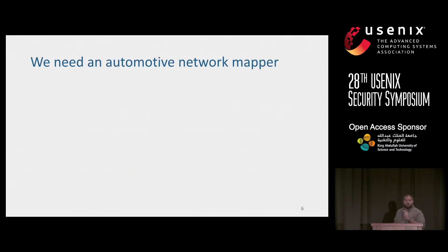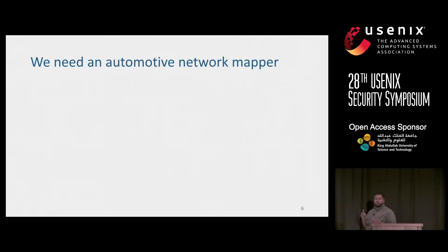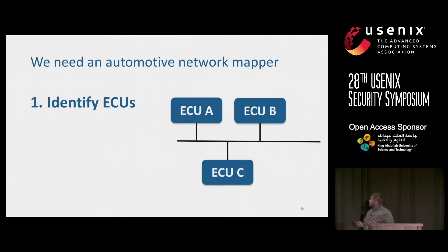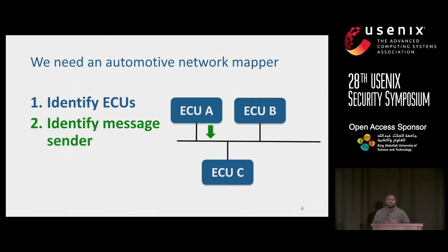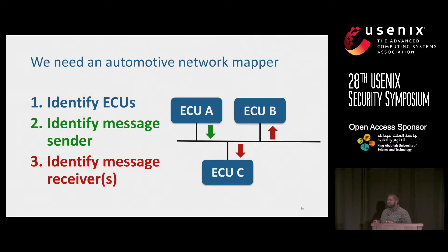We want to build an automotive network mapper. Guided by our three scenarios, we have three goals: first, we want to identify the ECUs in a network; then we want to identify the message sender for each message; and for each message, we also want to know which devices are receiving these messages.